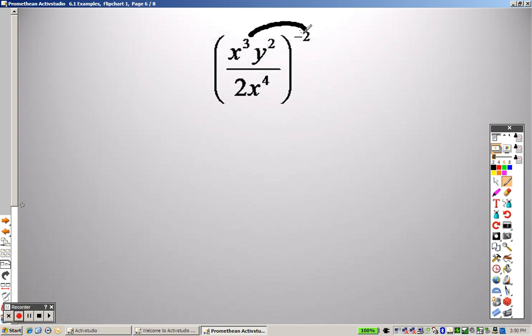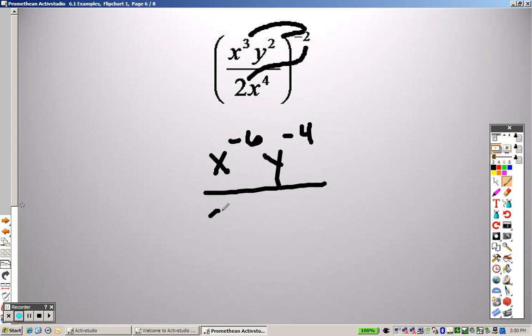With this, I take this through to everything. So there's the top. So that's x to the negative 6th. That's y to the negative 4th over. I have to take that through to the bottom as well. So that's 2 to the negative 4th. And that is x to the negative, let's see, what, negative 8th.